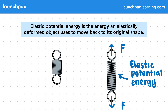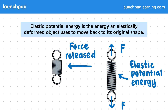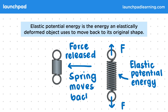This elastic potential energy comes from bonds trying to bring the particles back to the original shape. So when the force is released, the spring uses the elastic potential energy by converting it to kinetic energy to move the spring back to its original position.